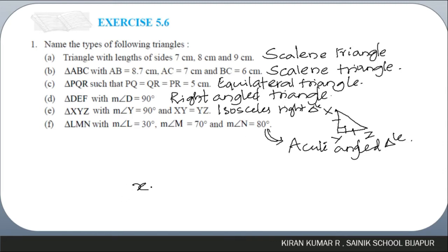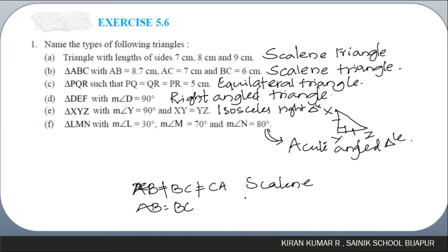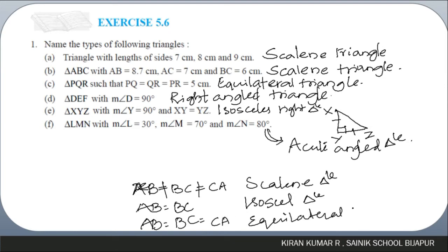Remember: if all sides AB, BC, CA are different, it forms a scalene triangle. If two sides are equal, it forms an isosceles triangle. If all three sides are equal, it forms an equilateral triangle. If all angles are less than 90 degrees it is acute-angled; if one angle equals 90 degrees it is a right triangle; if one angle is more than 90 degrees it is obtuse-angled.